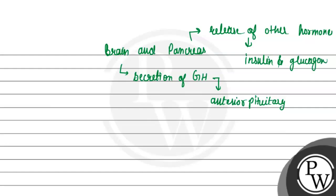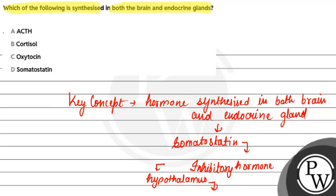So here the correct answer is somatostatin - the hormone which is synthesized in both brain and endocrine glands, not ACTH, cortisol, or oxytocin. I hope you understood it well. Best of luck to you.